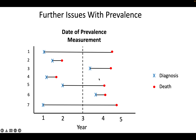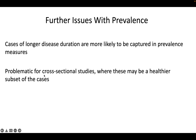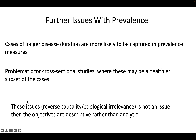We might falsely think chemo is the problem when really it's helping. These issues — reverse causality and etiological irrelevance — are not a problem when your objective is descriptive. If you're just trying to go to the village and ask how many people have polio and how many are exposed to well water, with no interest in whether one causes the other, then these issues of temporality are no longer a problem — you just want to know how much exposure and how much disease there is.